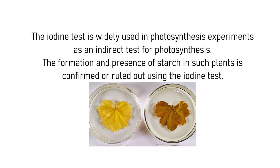The iodine starch test is also popularly used in plant physiology experiments as an indirect test to check if a plant is photosynthesizing. Starch is formed as a reserved food material primarily in the leaves of plants during photosynthesis. The formation and presence of starch in such plants is confirmed or ruled out using the iodine test. Check out the photosynthesis-related experiment videos linked in the description below.